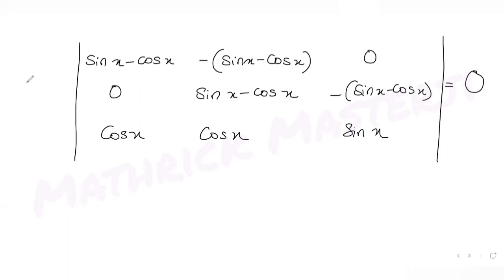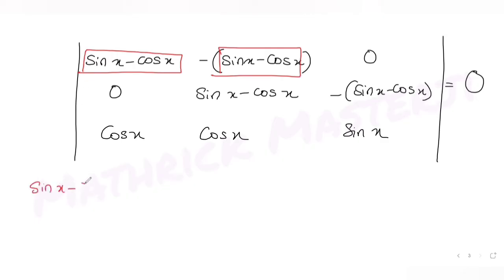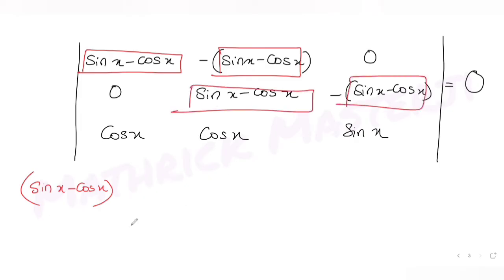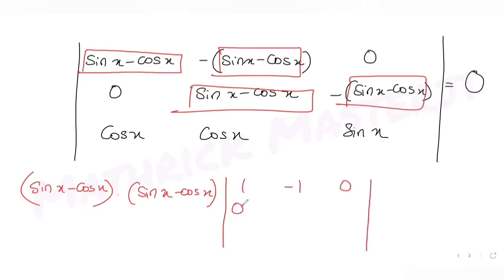Since sin x minus cos x appears in the first row and second row, I can factor it out from both rows. Taking (sin x minus cos x) out from the first row and again from the second row, what remains in the determinant is: first row 1, minus 1, 0; second row 0, 1, minus 1; third row cos x, cos x, sin x — all equal to zero. So we have (sin x minus cos x) squared times this determinant equals zero.